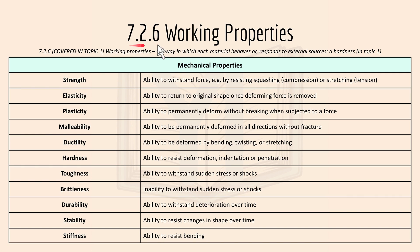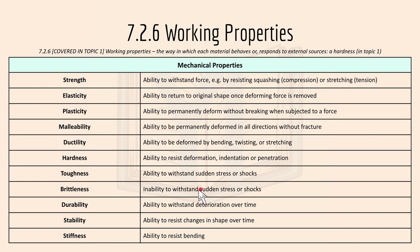7.2.6 is working properties, which I've covered in the core content, so I'll skim through. Strength is the ability to withstand force. Elasticity is the ability to return to original shape. Plasticity is the ability to be permanently deformed without breaking. Malleability is the ability to be permanently deformed in all directions without fracture. Ductility is the ability to be deformed by bending, twisting, or stretching. Hardness is the ability to resist deformation. Toughness is the ability to withstand sudden stress or shocks. Durability is the ability to withstand deterioration over time. Stability is the ability to resist changes, and stiffness is the ability to resist bending.